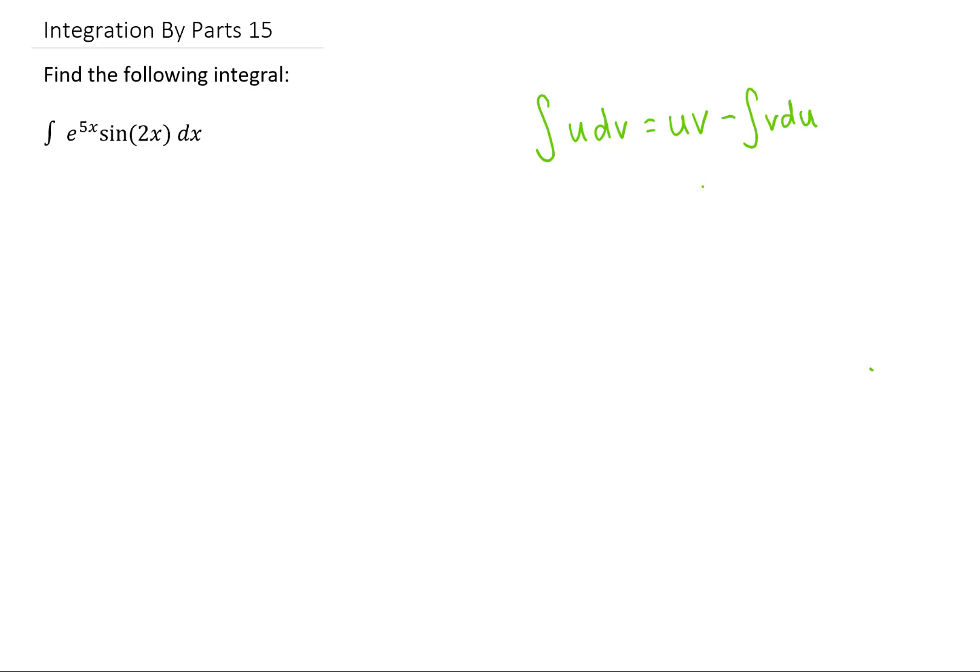Alright, this is the last in my initial list of integration by parts problems, and this one's pretty classic. Every calculus or calculus 2 student has to do a problem like this at some point during the semester. First, let me point out that this 5 and this 2 could be any numbers, but this problem is going to work out pretty similarly, no matter what those numbers are.